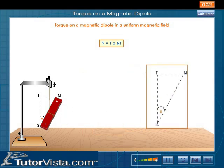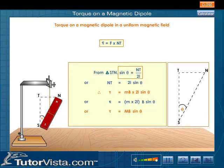From triangle STN, sin θ is equal to NT by 2L or NT is equal to 2L sin θ. Therefore Tau is equal to MB into 2L sin θ or Tau is equal to M into 2L into B sin θ or Tau is equal to MB sin θ.